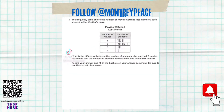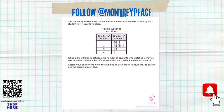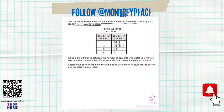Continuing with the 2021 fourth grade math release STAR test, this is number seven. There's a frequency table that shows the number of movies watched last month for each student. They want us to look at this table and find the difference between the number of students who watched two movies and the number of students who watched one movie.